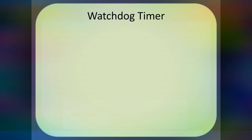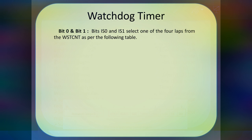Coming to the watchdog timer control register lower byte, we will see from bit 0 to bit 7. First, bit 0 and bit 1: bit 0 is IS0 and bit 1 is IS1. These two bits are used for selecting the source of the clock.